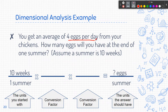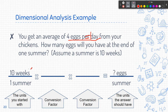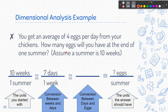I have four eggs per day, so one day is equal to four eggs. How many eggs will you have at the end of one summer? I can get days, but I don't have weeks, so that means I need to convert my weeks into days before I can convert my days into eggs. Because I have weeks on top, I am going to need to have weeks on the bottom so that they cancel out. I know that seven days is equal to one week.